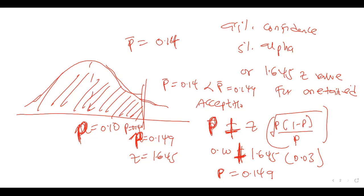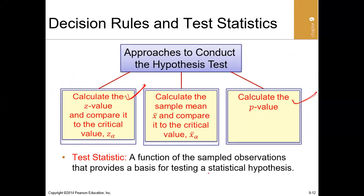In summary, we can test a hypothesis using three approaches: (1) compute the z-value and compare it to the critical z; (2) compute the z using the p-value approach, as shown in the hypothesis testing for population mean; and (3) compute the sample proportion and compare it to the critical proportion value. Here the sample proportion of 0.14 is less than the critical proportion of 0.149.